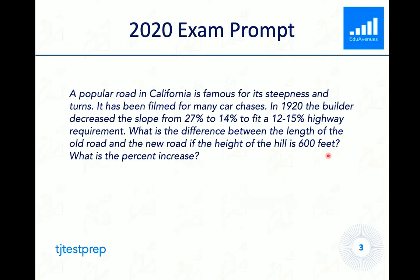So the prompt was: a popular road in California is famous for its steepness and turns. It has been filmed for many car chases. In 1920, the builder decreased the slope from 27% to 14% to fit a 12-15% highway requirement. What is the difference between the length of the old road and the new road if the height of the hill is 600 feet? What is the percent increase? Pause the video now to try and solve this problem on your own before we go over it together.